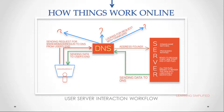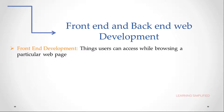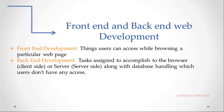Now we will discuss front-end and back-end web development. Front-end development means things that users can access while browsing a particular web page — that includes every kind of graphics, fonts, and all content visible inside a website. Back-end operations are tasks assigned to the browser in case of client-side, or to the server in case of server-side, along with database handling operations which users don't have access to. Those kinds of tasks are known as back-end development.